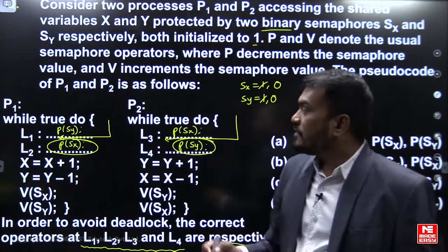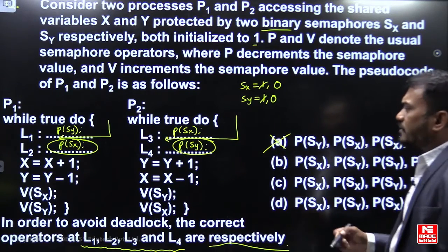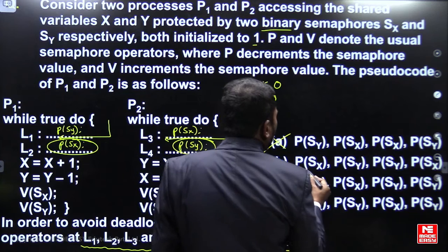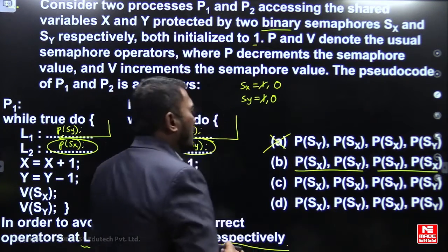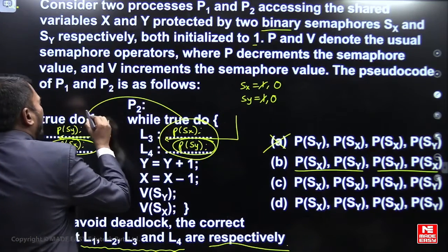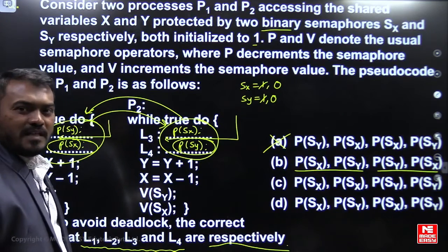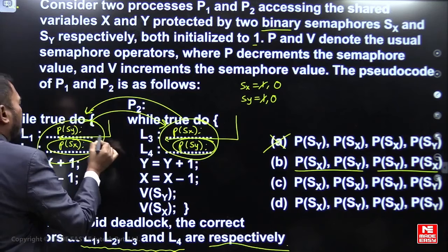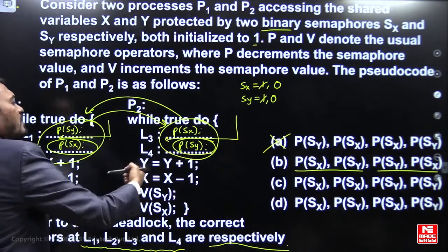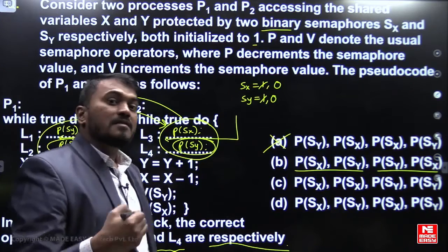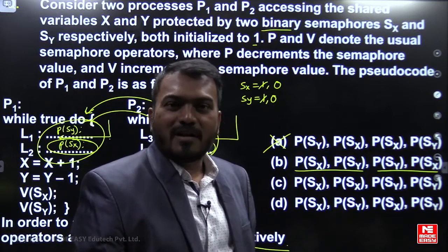Option A is the wrong answer because it leads to deadlock. Option B is exactly the same — just with down(SX) and down(SY) shifted between the processes. The same execution scenario applies: perform the first down operation successfully, take preemption, and when both processes come back, both get suspended in the same manner as option A. So option B is also a wrong answer.